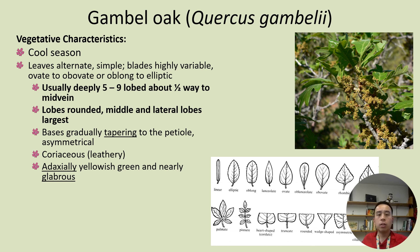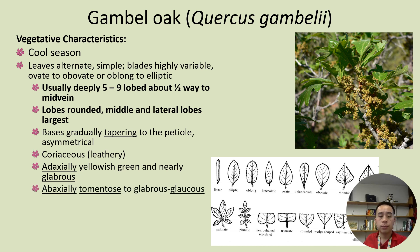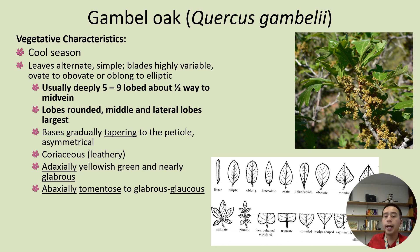The adaxial upper surface of the leaf is yellowish-green and can sometimes be nearly glabrous, meaning no hairs and smooth. On the underside or abaxial side of the leaf, you'll often find it is tomentose to glabrous-glaucous. Tomentose means densely covered in short, matted, woolly hairs, and glabrous means no hairs. Glaucous in this case is probably referring to a powdery substance on the leaf surface.